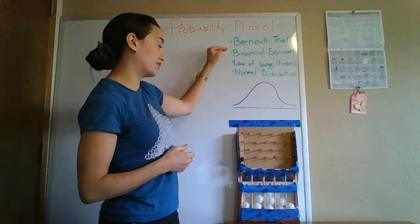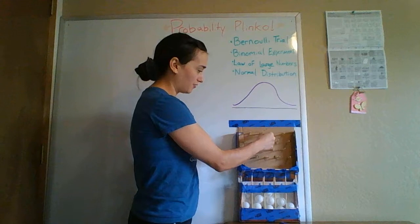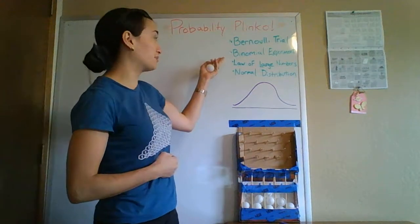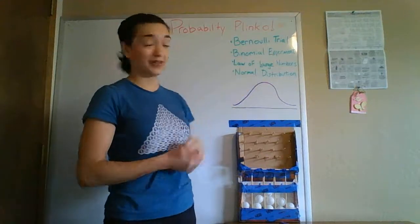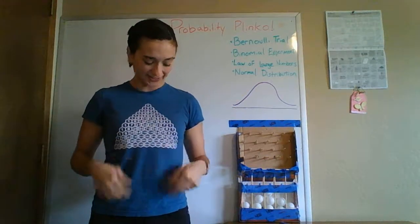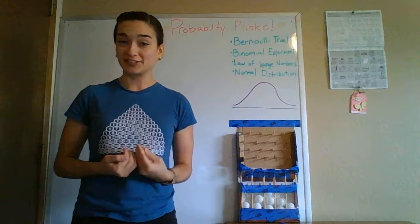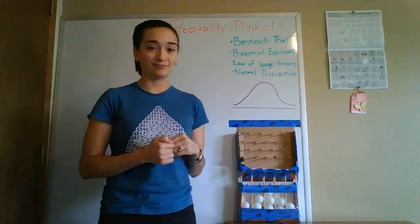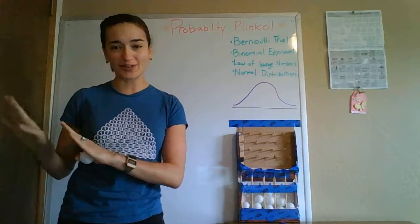When you do a repeated number of Bernoulli trials, as you can see the ball follows a path and has to choose right or left many times, you're actually performing a binomial experiment. As you can see on my t-shirt, this is called Pascal's Triangle, and these are the coefficients to predict probability of the binomial experiment, which is also a whole other video.